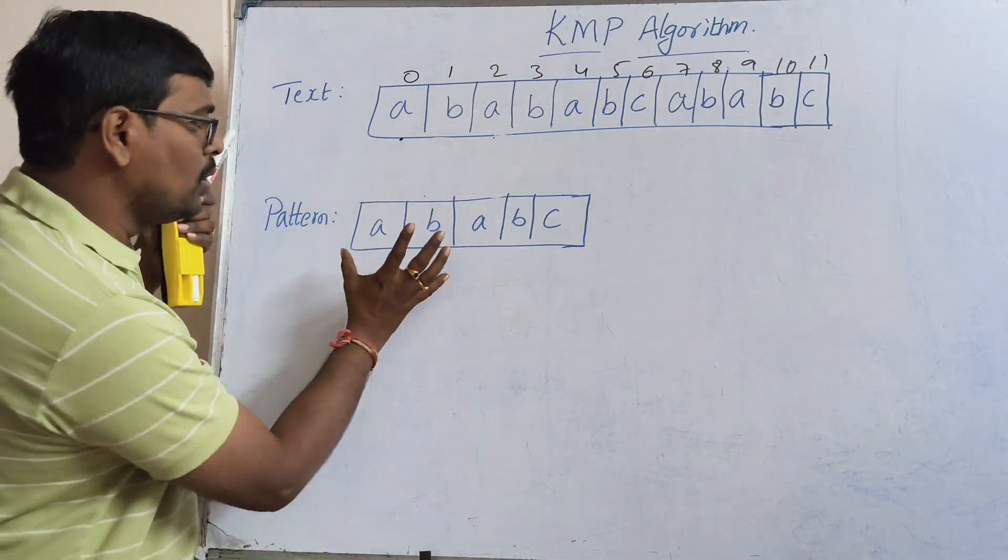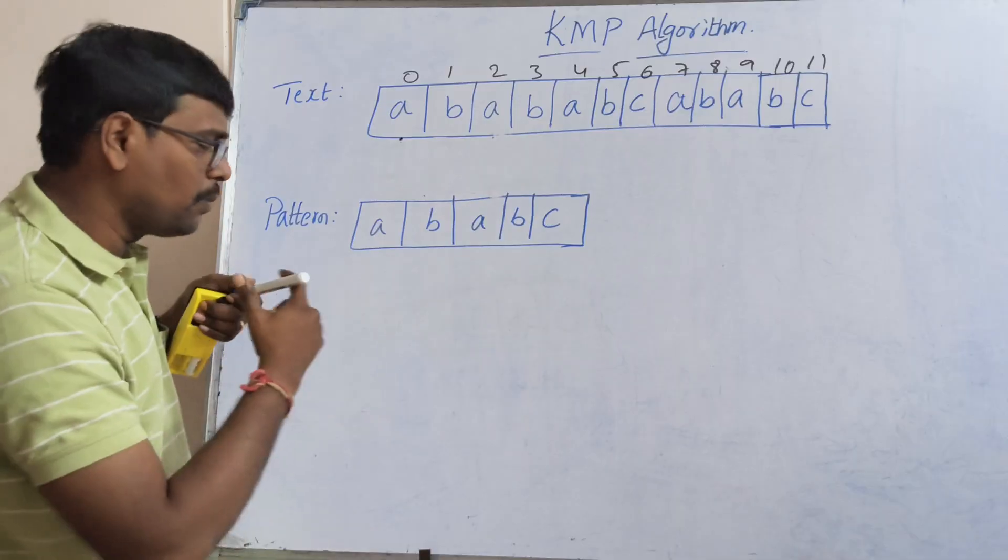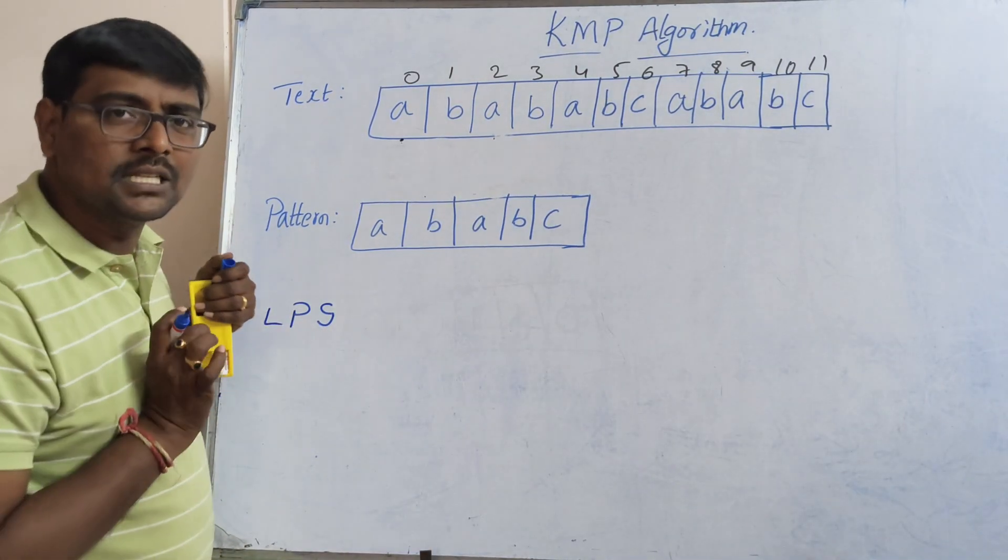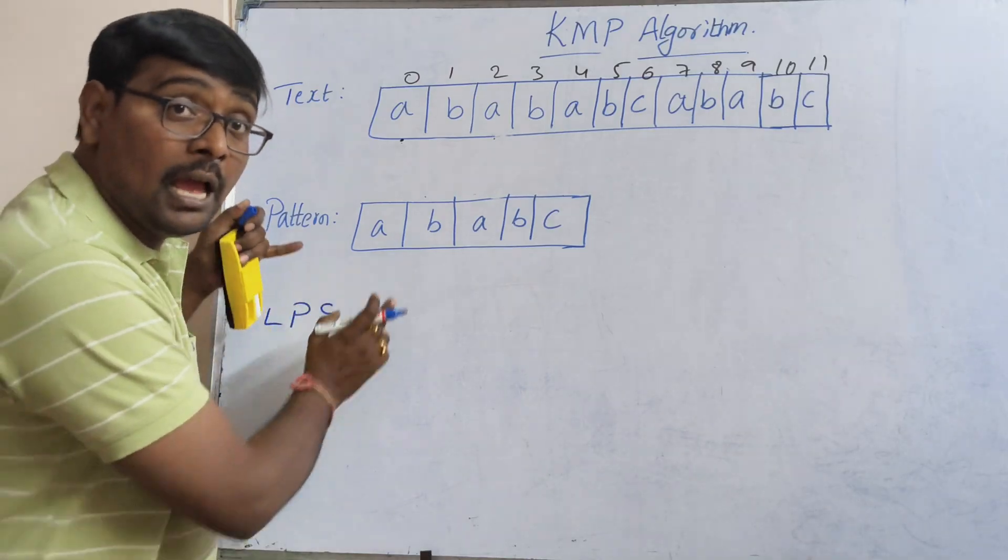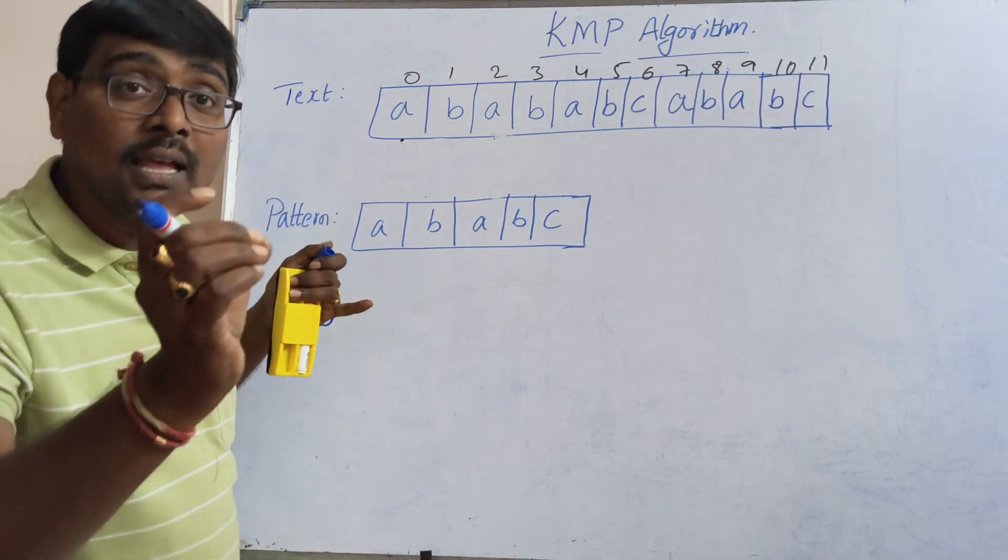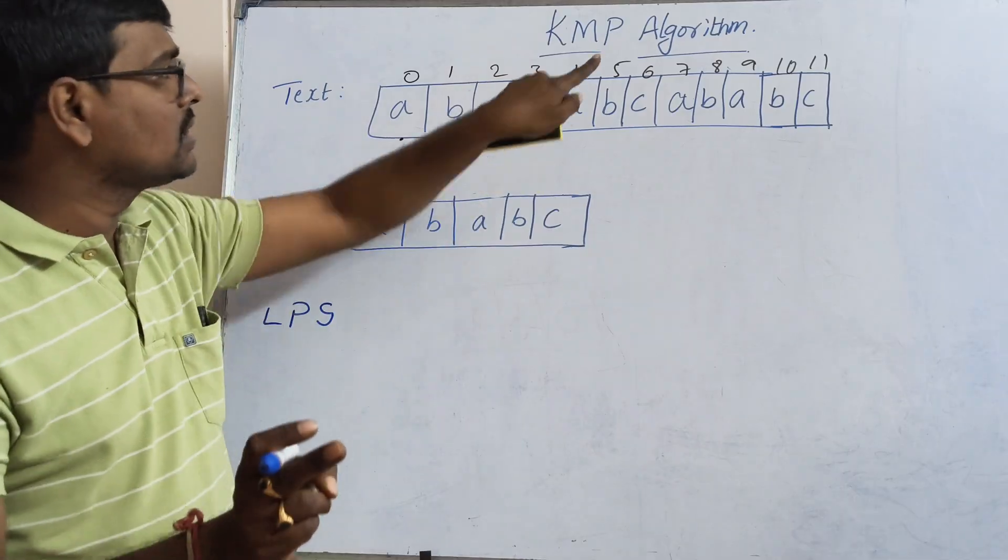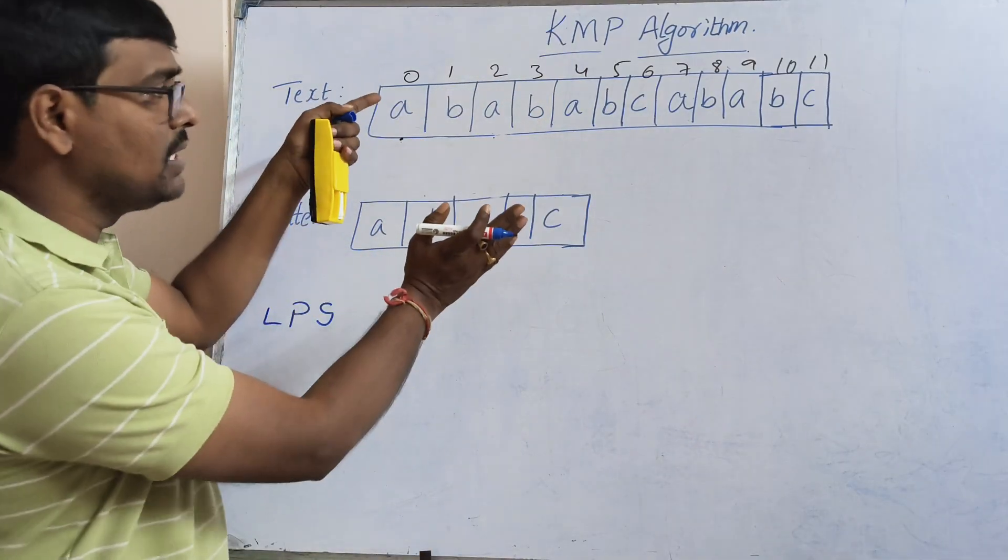Instead of a brute force approach, the KMP algorithm constructs an LPS table for the pattern. Based on the LPS table, it performs the comparison. We already discussed the KMP algorithm with one example. Now in this session we are directly moving to the example.